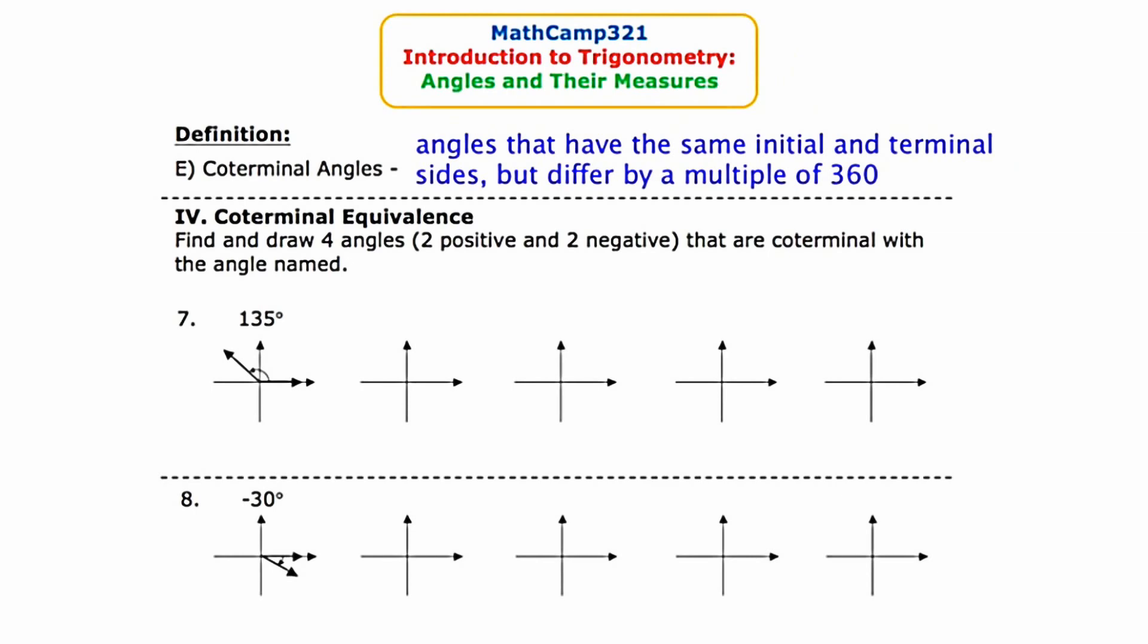This slide starts with a definition. I'd like you to pause the video and copy the definition before we continue. The definition is for coterminal angles. These are angles that have the same initial and terminal sides, but differ by a multiple of 360 degrees.